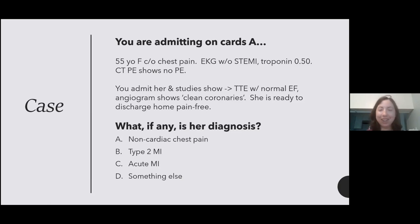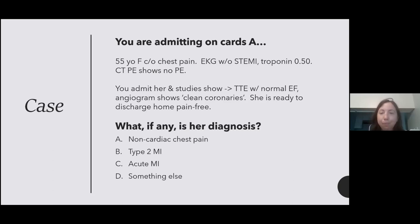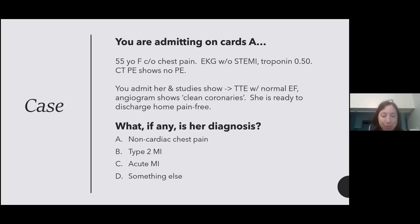All of you primary care R2s, you have to answer individually at your viewing party. So we get 8% think it's non-cardiac, 45% think that this is a type 2 MI, 13% think it's an acute MI, and a third of you think it's something else. Somebody put answer choice E, which is the write-in option. Thank you guys for doing that poll. So today's talk is about this entity called MINOCA.